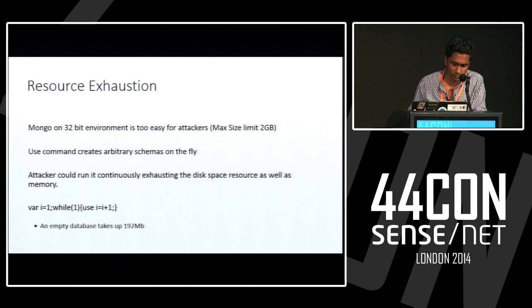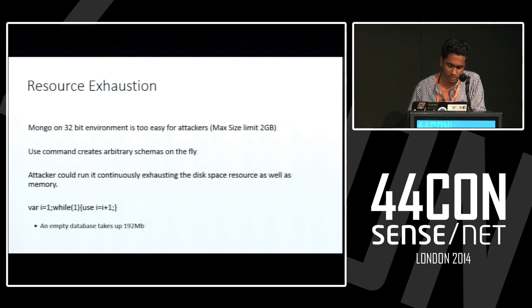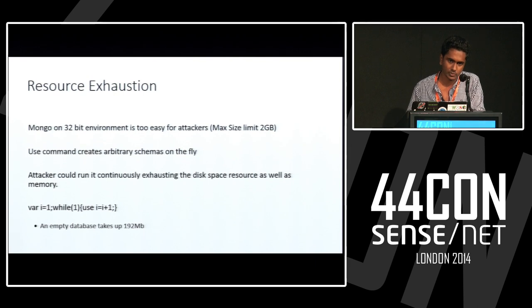Resource exhaustion on MongoDB: MongoDB on 32-bit environments is too easy for attackers. The 'use' command creates arbitrary databases on the fly. An attacker could run it continuously, exhausting the space as well as memory. This is a simple one-liner service attack — he could write an infinite while loop and tell it to create databases unlimitedly. The problem is that an empty database occupies up to 192 MB by default on Mongo, so within a few loop executions the whole resource would be exhausted.